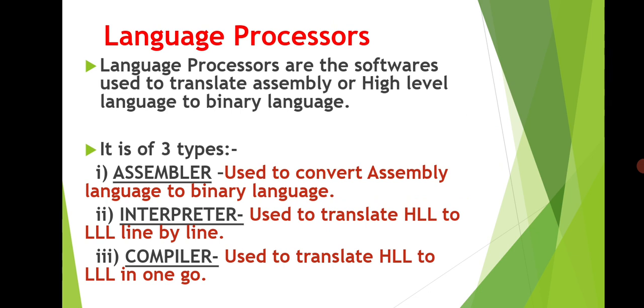Now as we have seen that when high level languages are used, then computer requires language translators. So these are also known as language processors. These are of three types. Assembler which is used to convert assembly language into machine language. Then we have interpreter which converts high level language into low level language but it converts line by line. Then we have compiler which also converts high level language to low level language but it converts the whole program in one go. Compiler takes less time as compared to interpreter.